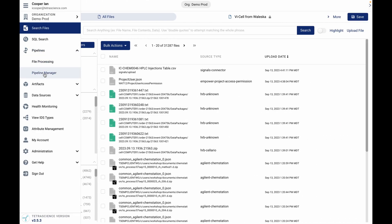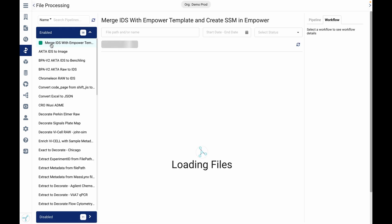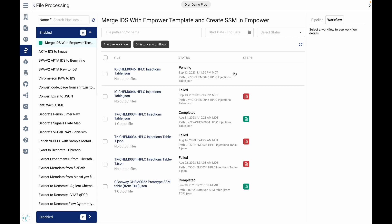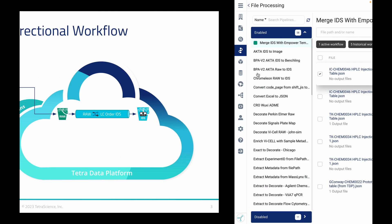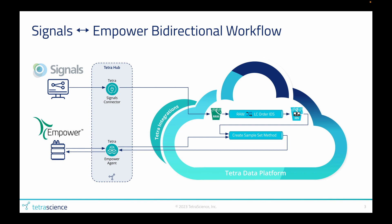If we go back into TDP, we can look at our current pipeline status — our pipeline is just about to run. This will trigger another pipeline to take data from that IDS and query Empower via our Empower agent for a template sample set method. It will then merge those two pieces of data together to create a new sample set method with the sample information from the ELN, and send that data to Empower via our Empower agent.